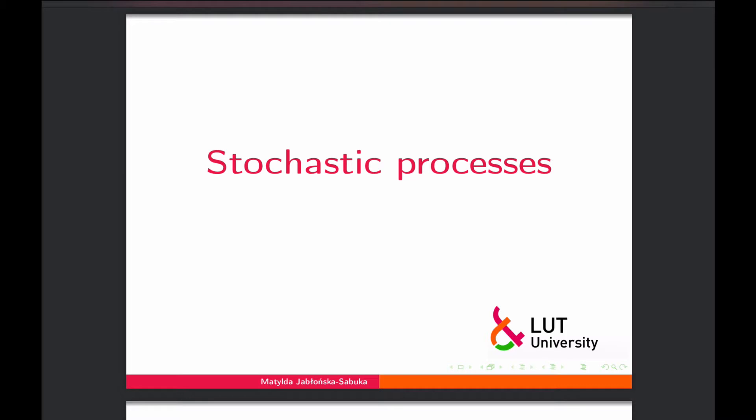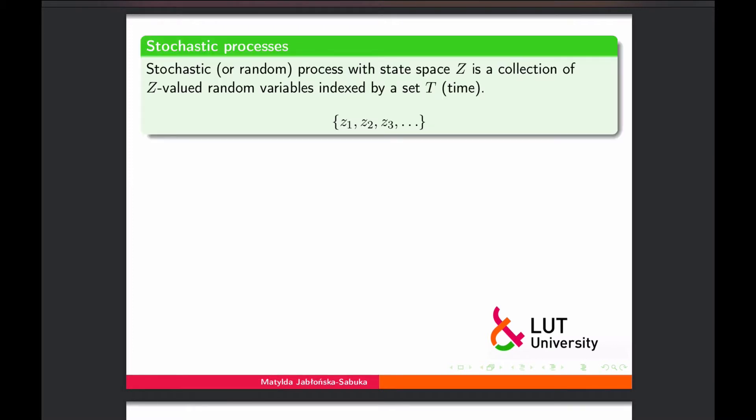In classical time series decomposition, what remains as the irregular series is modeled with stochastic processes. So let's start from the basic terms and concepts. A stochastic, or in other words random, process with state space Z is a collection of Z-valued random variables indexed by a set T which represents time.